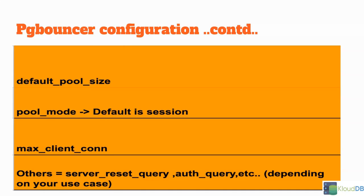Important parameters include default pool size — set it according to your needs. Pool mode is very important: the default is session, but you also have transaction-based pooling and statement-based pooling. Depending on your needs, benchmark your workload and decide the pool mode and pool size. There is also max client connections — if you want to restrict the number of client connections, you can set a number here. There are other parameters like server reset query, but I've shown you the important ones — depending on your use case, you may need to tweak those as well.